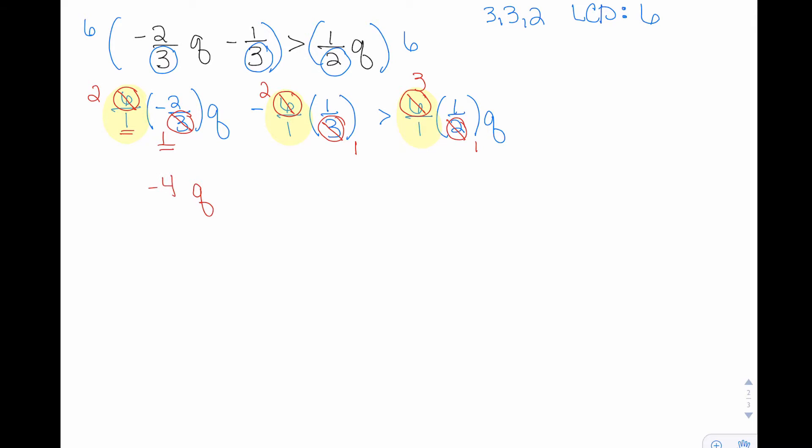Same thing for the next term: one in the denominator, so no more denominator. I'll multiply two times one, and because it was originally negative, that's also going to be negative.